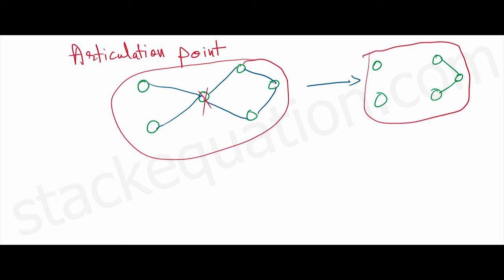So here, if I remove this vertex, we get a graph which is completely disconnected — we can clearly see that we can't reach from this vertex to this vertex, or this vertex to this vertex, or this vertex to this vertex, which was not the case previously.